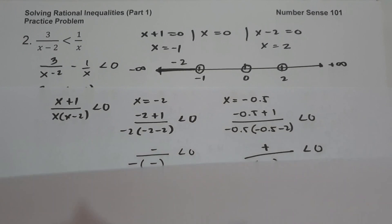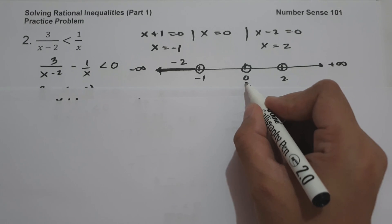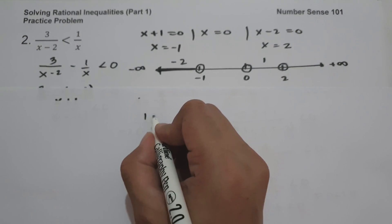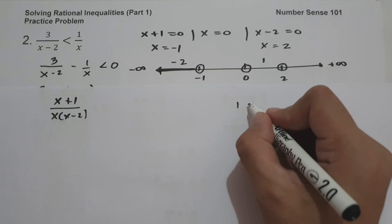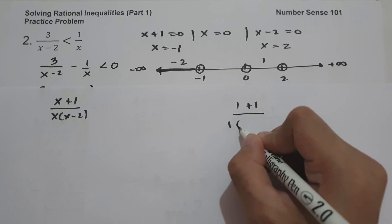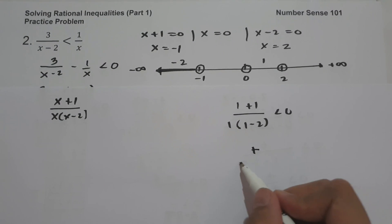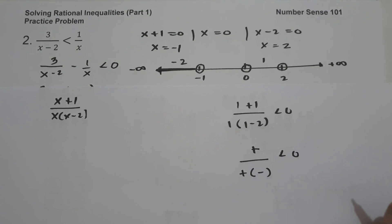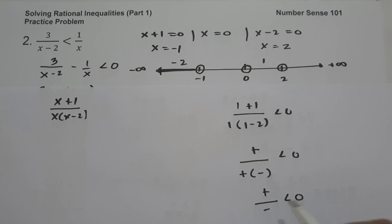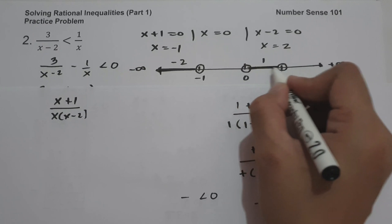Testing a number between 0 and 2, say x equals 1: 1 plus 1 is positive, and 1 times 1 minus 2 is negative. So positive divided by negative is negative, less than 0 — this is true. I'm going to shade this region as part of our solution.